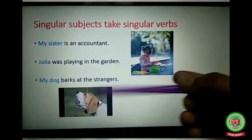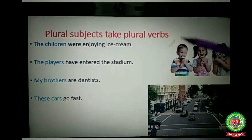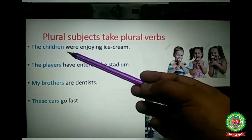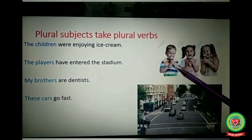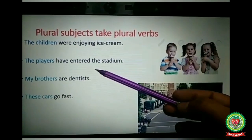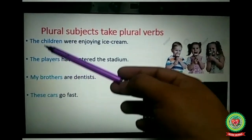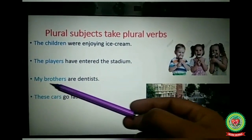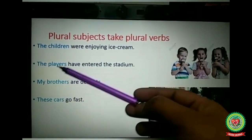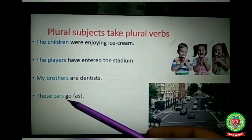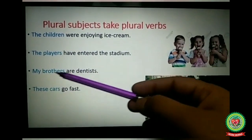The next rule: plural subjects take plural verbs. Look at the example — 'The children were enjoying ice cream.' Children means more than one, so it is a plural subject and takes the plural verb 'were.' Next: 'The players have entered the stadium' — the players are plural so we take the plural verb 'have.' Next: 'These cars go fast' — these cars is a plural subject so it takes the plural verb 'go.'